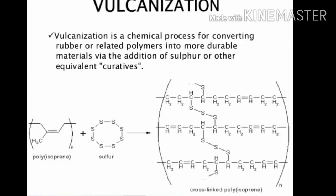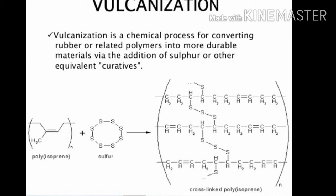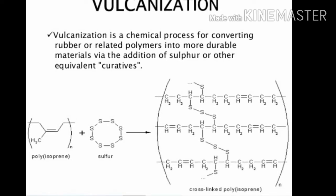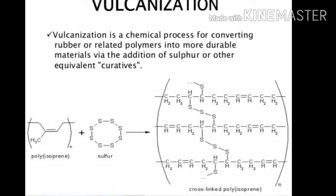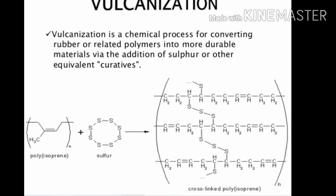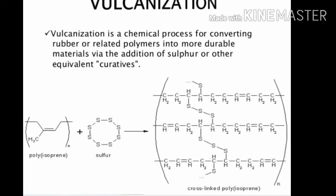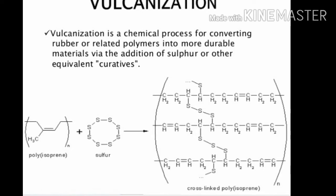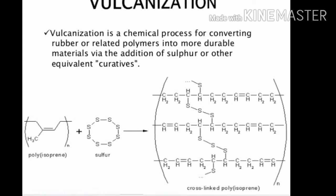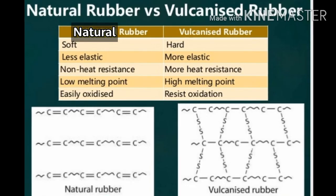Vulcanization creates more durable materials with good qualities through the addition of sulfur and other chemicals. Here you can see the polyisoprene formula bond structure. After the addition of sulfur, you will get cross-linked polyisoprene. The cross-linked chain shows a bond between the first chain carbon and the second chain through sulfur atoms — this is the cross-linked structure of vulcanized rubber.